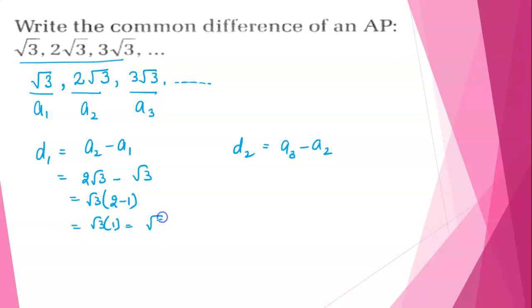And here D2, 3 root 3 minus 2 root 3. Now take root 3 as common, 3 minus 2 and here root 3, 3 minus 2 is 1. So we will write root 3, 1 is root 3.